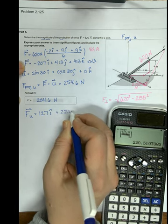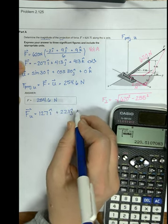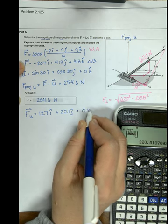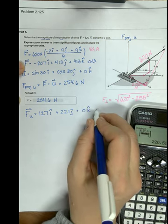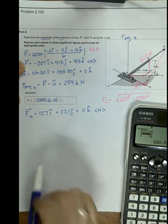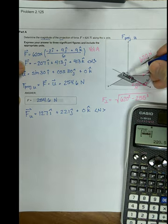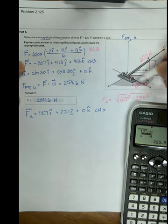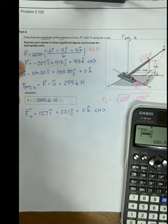...plus 221j plus 0k Newtons. And that should make sense that this force vector that lives in the xy plane has only x and y components.